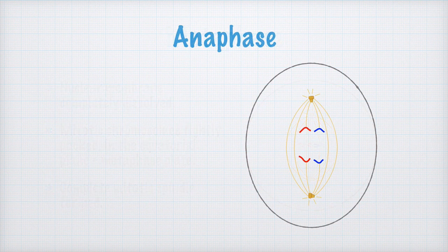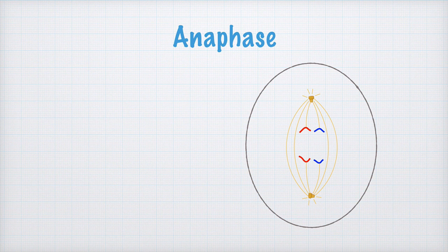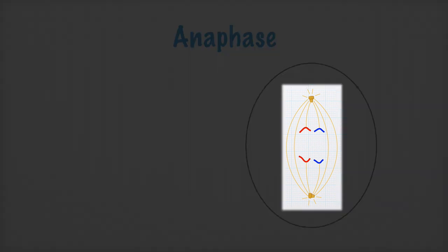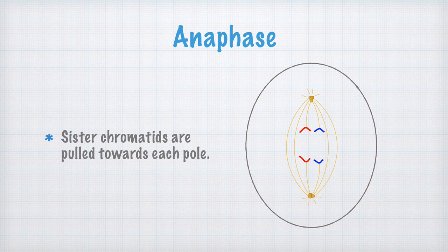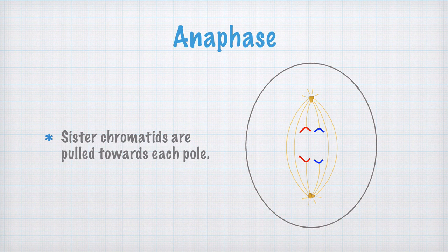When the cell enters the anaphase, it is elongated to form more of an obloid structure. These protein filaments that are attached to the centromeres, they pull on the sister chromatids. In this way, the sister chromatids are separated from each other, pulled towards different poles of the cell.